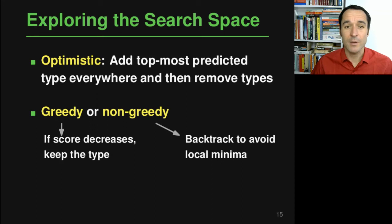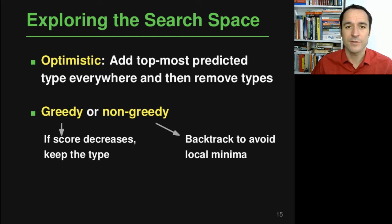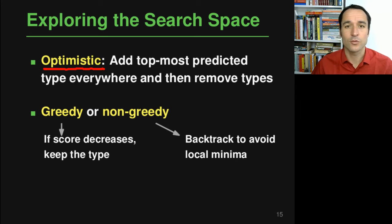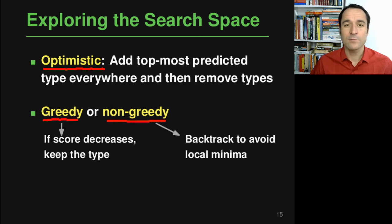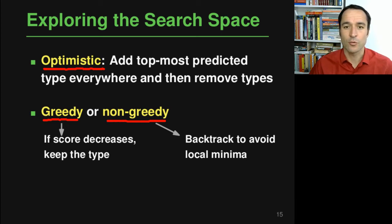Given this feedback function, TypeWriter explores the search space trying to minimize the feedback score — adding as many type annotations as possible without introducing type errors. The search works optimistically: TypeWriter first adds the top-most predicted types everywhere, then removes or refines some to reduce type errors. TypeWriter can be configured to use a greedy or non-greedy exploration strategy. Greedy means following improvements immediately, while non-greedy sometimes backtracks to avoid getting stuck in local minima.